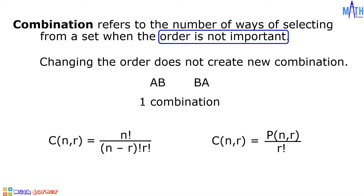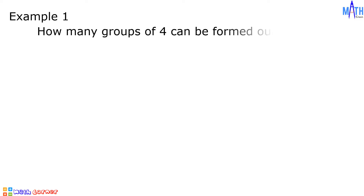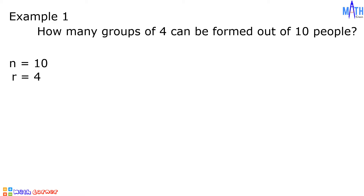Let us have some examples. Example number one: how many groups of four can be formed out of ten people? This is a combination problem since changing the order of the members of the group does not create another group. The value of n is 10 and the value of r is 4.